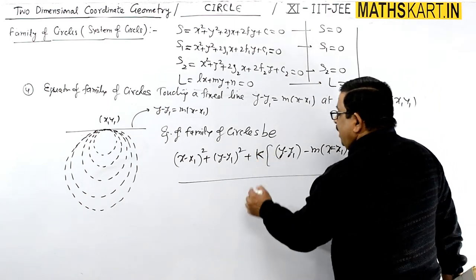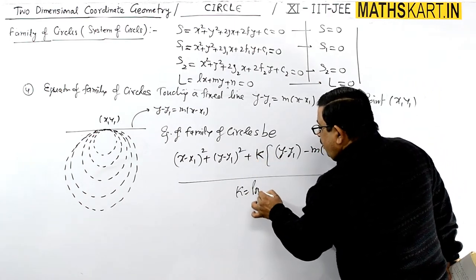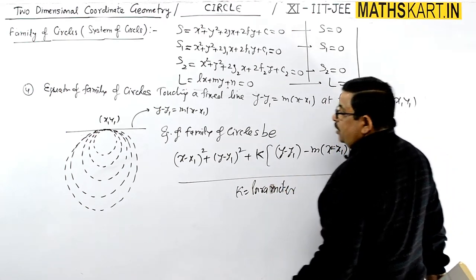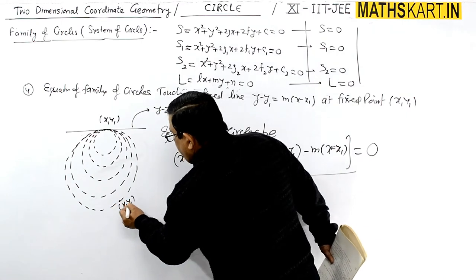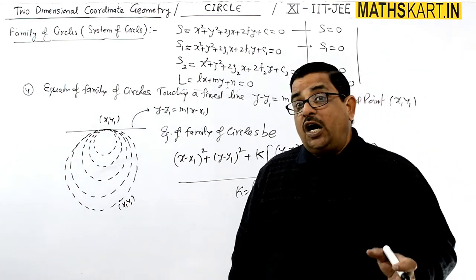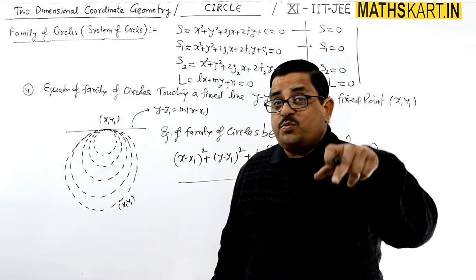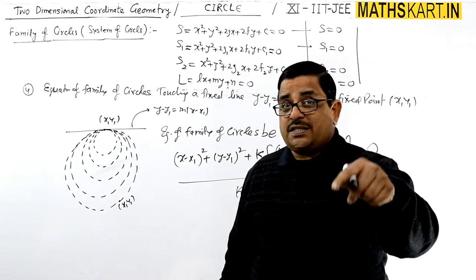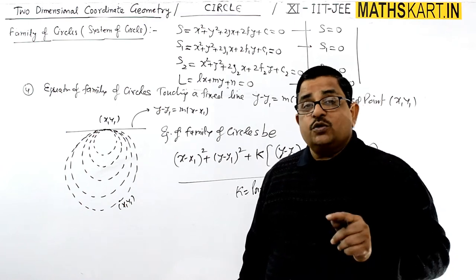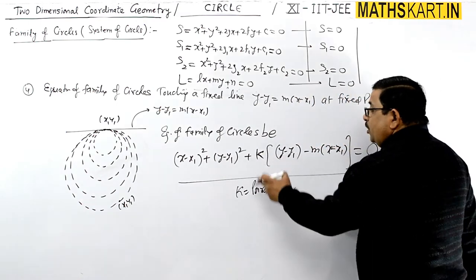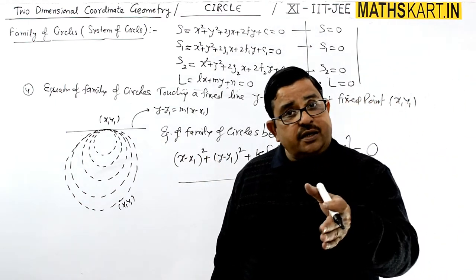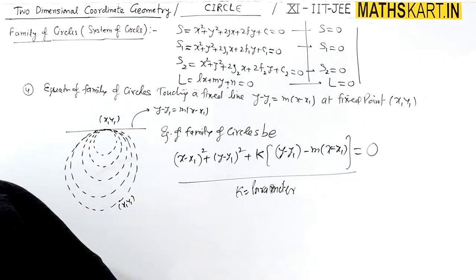Here k is definitely a parameter. As k changes, each value gives a different circle, and each circle will pass through the point x1, y1. Suppose out of the family of circles, you want a specific circle — then you place an additional condition (e.g., another point the required circle passes through), which gives you the value of k. Put that k value back and you get the required circle.